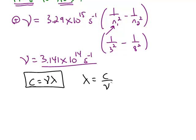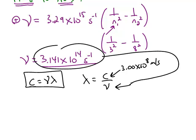That would be c divided by the frequency. And we know the speed c is 3 times 10 to the 8th meters per second. The frequency we just calculated. So we can get the wavelength 9.55 times 10 to the negative 7 meters, which is equivalent to 955 nanometers.